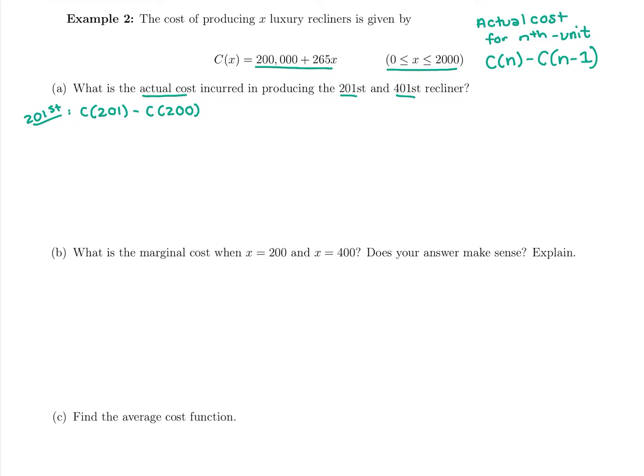The total cost for all 201 that I'm getting is $253,265, minus I'm going to plug in 200 for x and I'm getting $250,000 even. So the difference between the two is $265. So it costs $265 extra for that 201st recliner.